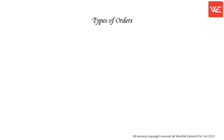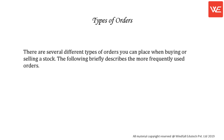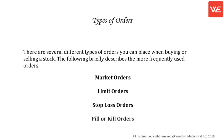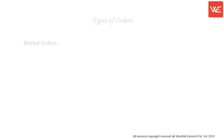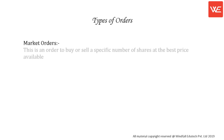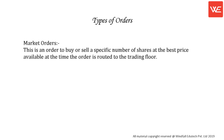Types of Orders: There are several different types of orders you can place when buying or selling a stock. The more frequently used orders are: Market Orders, Limit Orders, Stop Loss Orders, and Fill or Kill Orders. A market order is an order to buy or sell a specific number of shares at the best price available at the time the order is routed to the trading floor.